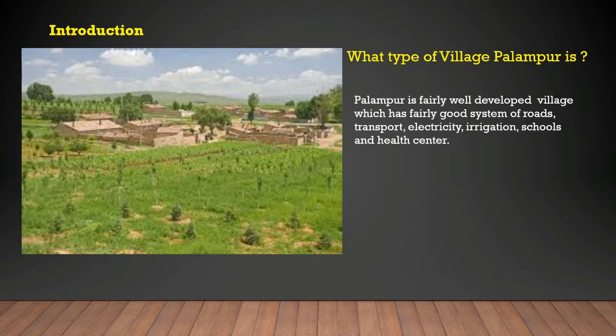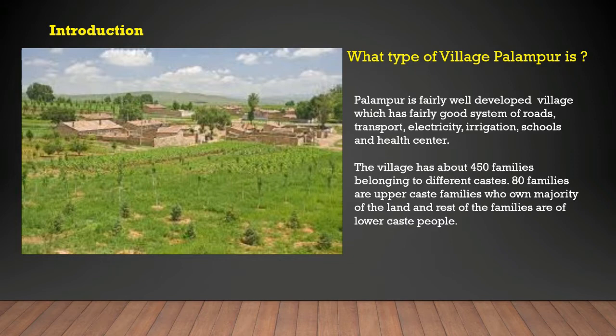The social composition of the village: the village has about 450 families belonging to different castes. 80 families are upper caste families who own the majority of the land, and the rest of the families are lower caste people.